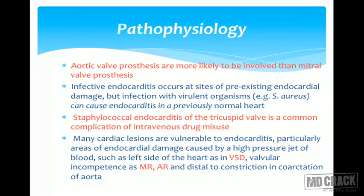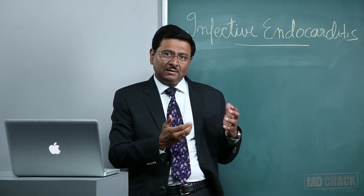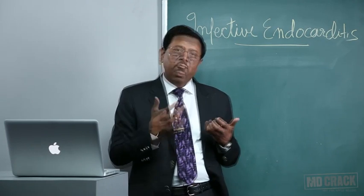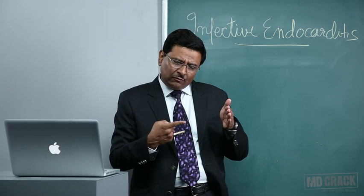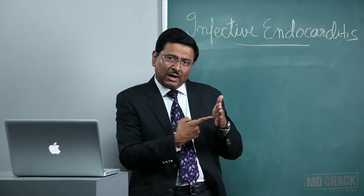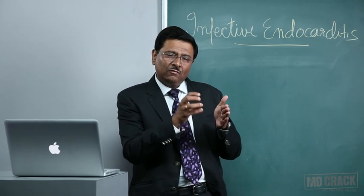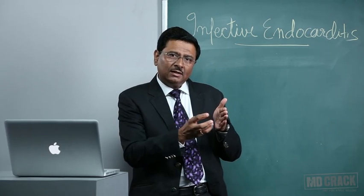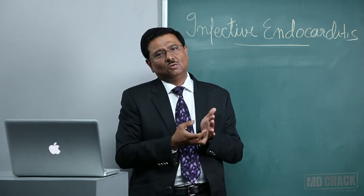Many cardiac lesions are vulnerable to endocarditis, particularly areas of endocardial damage caused by a high-pressure jet of blood, such as the left side of the heart in ventricular septal defect. In VSD, the pressure gradient between the left and right ventricle creates a jet of blood that pierces the endocardium, producing a small defect. Platelets and fibrin deposit there, and the area gets colonized by bacteria, forming vegetations.